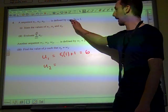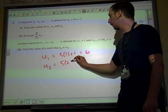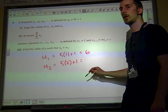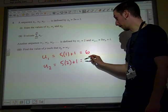U2, again, replace n by 2. So 5 times 2 plus 1. So that's going to be 10 plus 1 is 11.